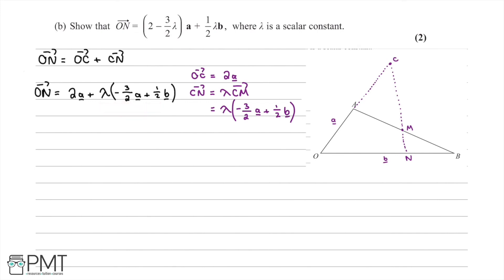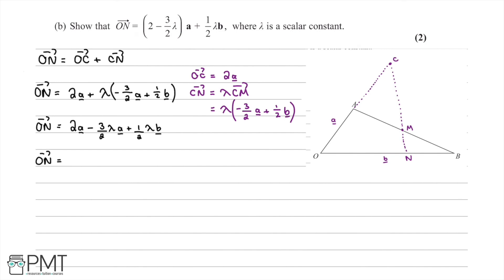Collecting like terms: the vector ON is equal to 2a, then subtract three over two lambda a, then add one half lambda b. Collecting the a terms, the vector ON is equal to (2 minus three over two lambda) a plus one half lambda b. Looking back at the question, this was the required result — as required.